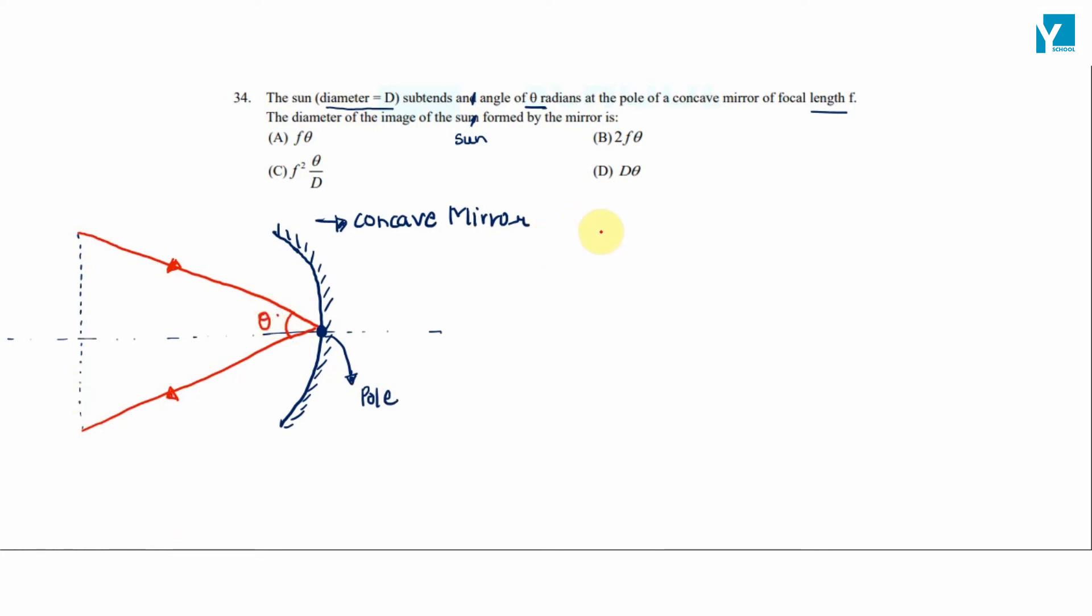We know the mirror formula: 1/f = 1/v - 1/u. For the sun, u is equal to infinity. This implies 1/f = -1/v, which means v = -f.